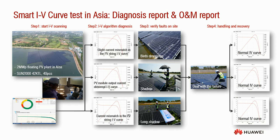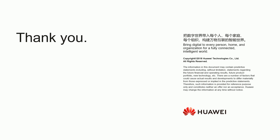To summarize the procedure: the IV curve diagnosis has to be carried out remotely on the FusionSolar web application and can be done by anyone able to operate the FusionSolar system. First, all the panel data and string data has to be given to the system. The output will be the diagnosed reports from which the OEM can start to verify the faults on site, and then handling and recovery can start. By the end of the day, all the problems can be mitigated.